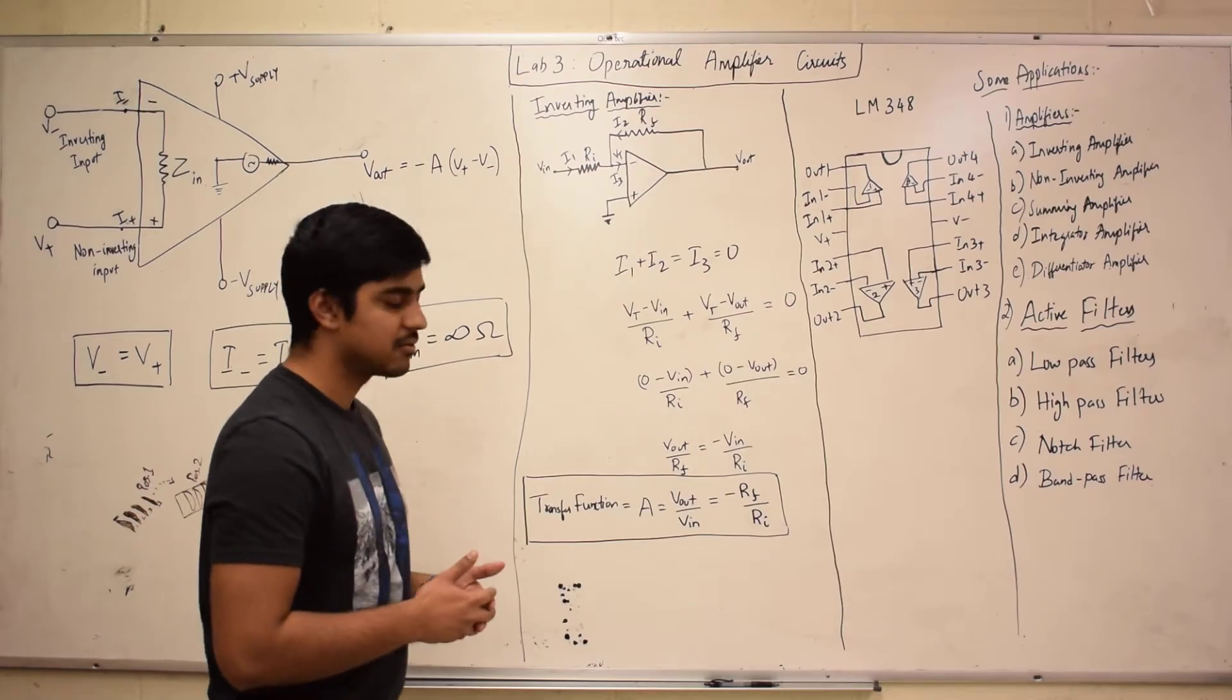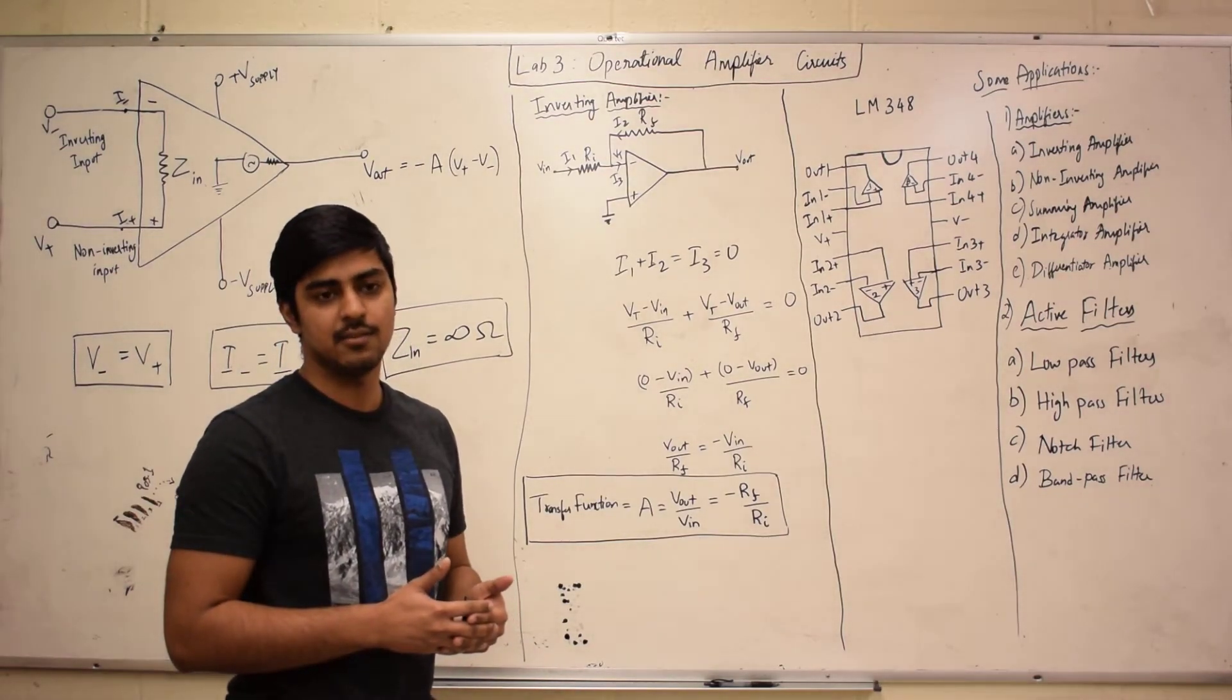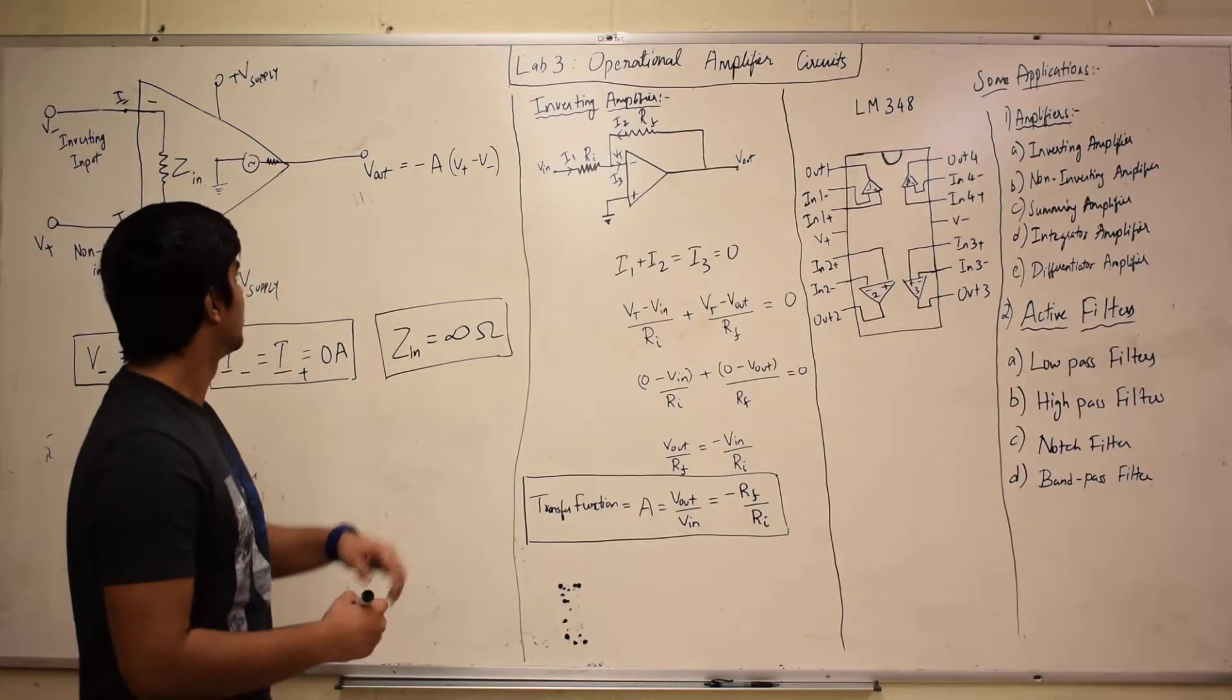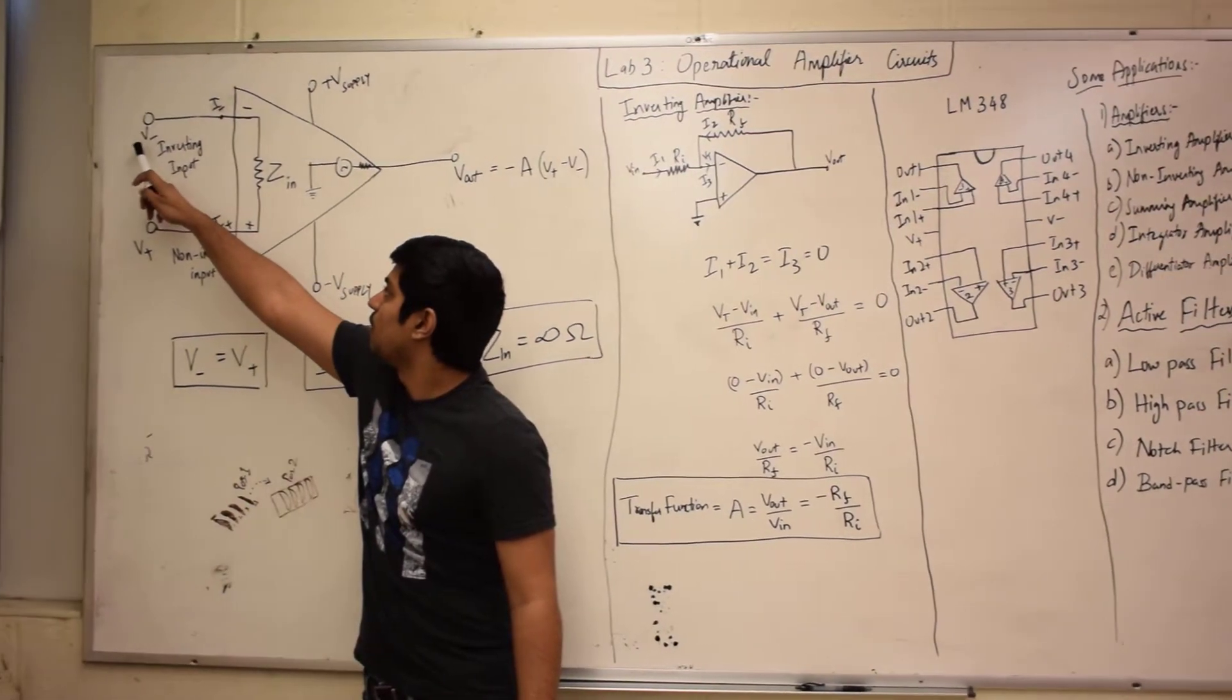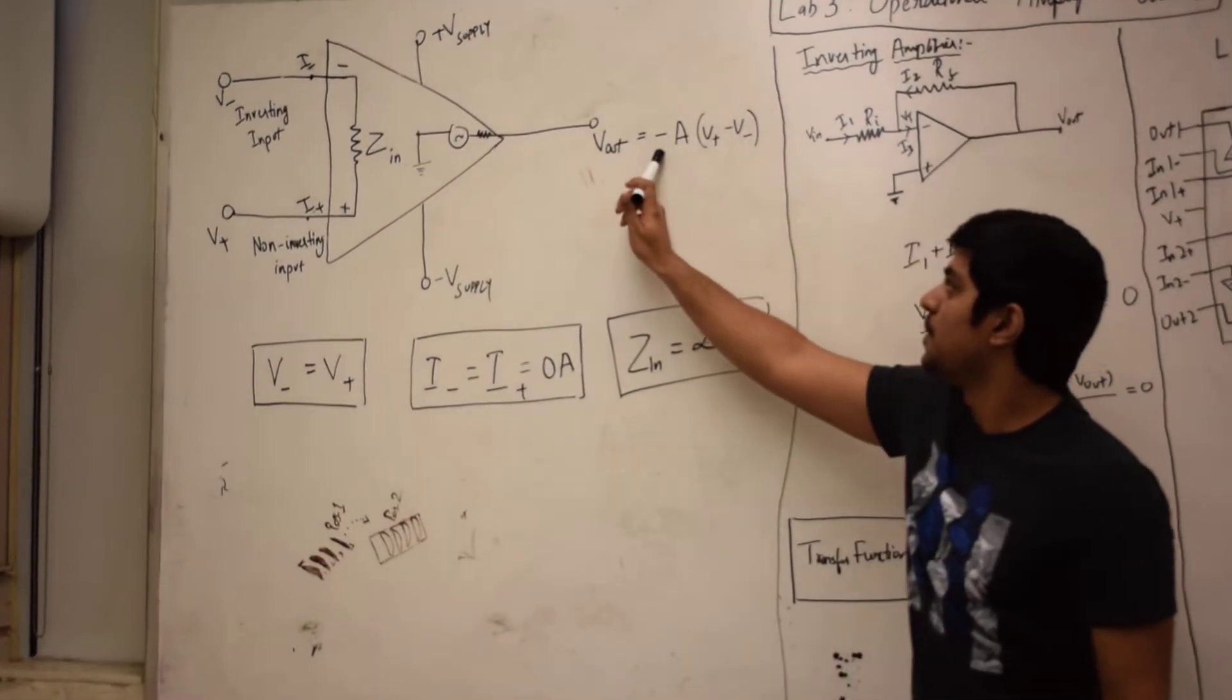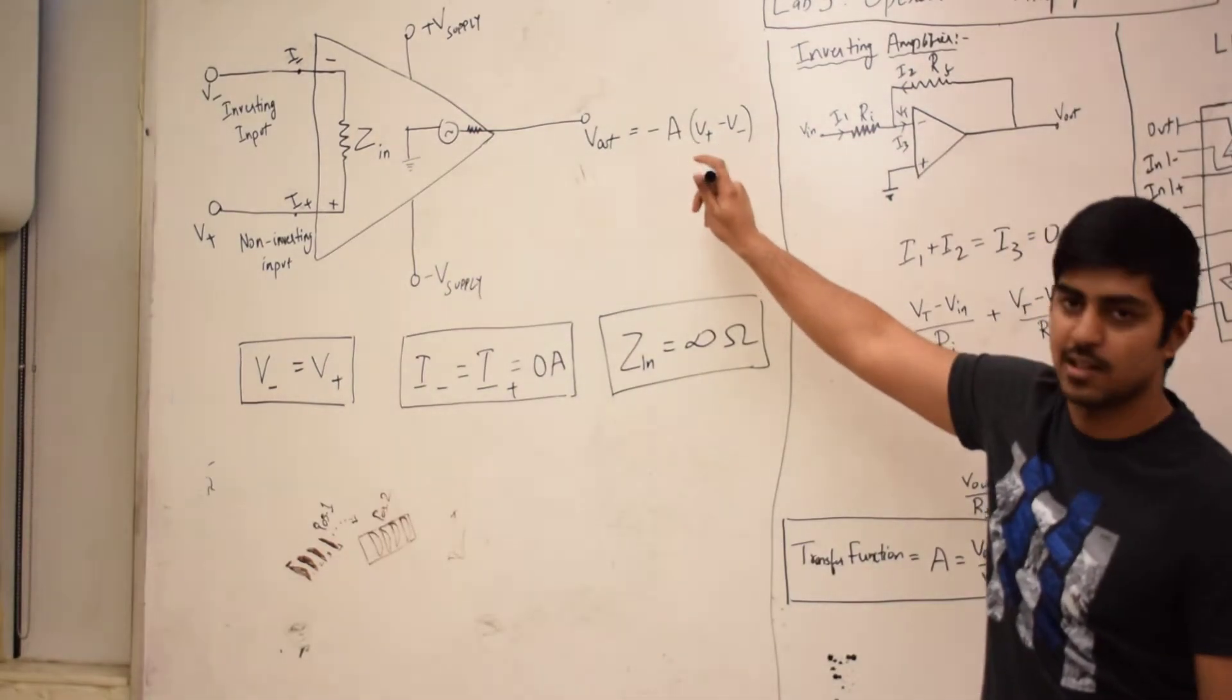The transfer function is also your amplitude of gain for your circuit. Usually, as you can see here, if you have an input of V- and V+, your output would be minus A times V+ minus V-.